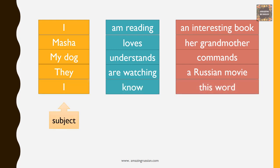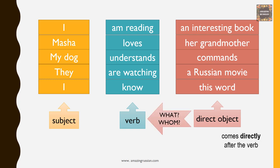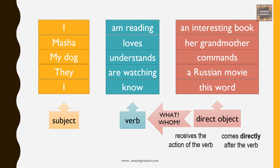I, Masha, my dog, they, I — they are subjects. Am reading, loves, understands, are watching, know — these are verbs or predicates. An interesting book, her grandmother, commands, a Russian movie, this word — these are direct objects. It's called the direct object because it comes directly after the verb, answers the question what or whom, and receives the action of the verb. The verbs here are transitive — transitive verbs always require the usage of direct objects.